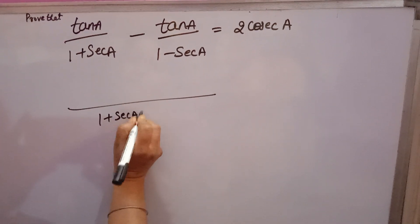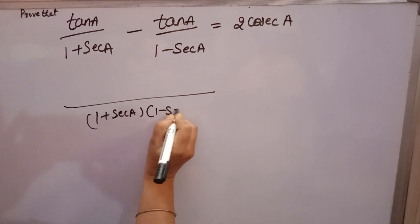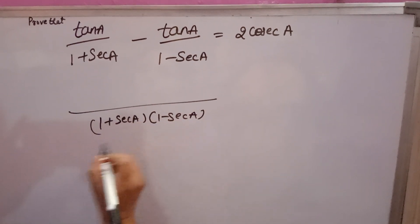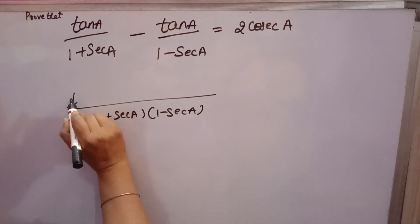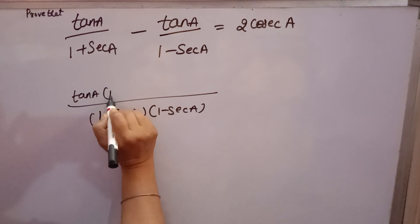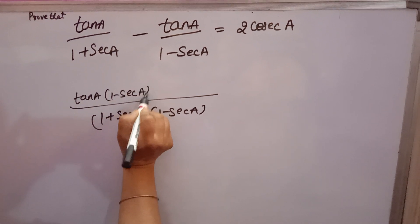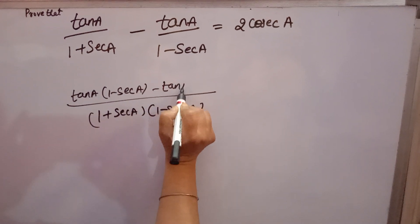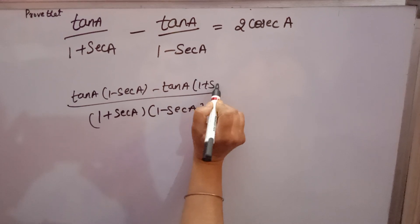Take LHS. 1 plus sec A, 1 minus sec A will come. As you are solving the fraction, you will get here tan A into 1 minus sec A minus tan A into 1 plus sec A.